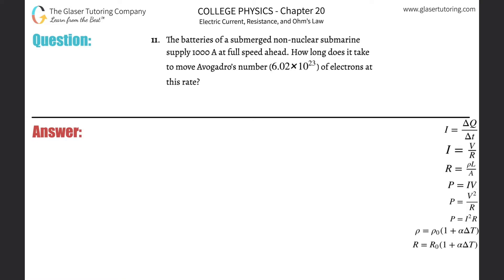Number 11: The batteries of a submerged non-nuclear submarine supply 1000 amps at full speed ahead. How long does it take to move Avogadro's number, 6.02 times 10 to the 23rd, of electrons at this rate?